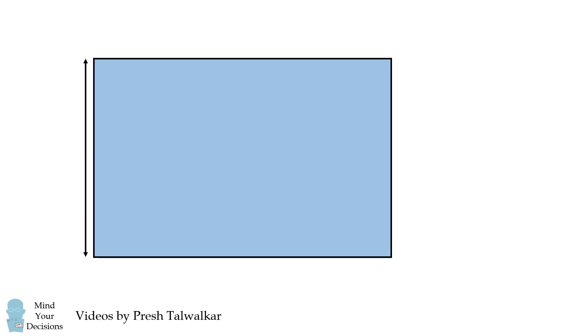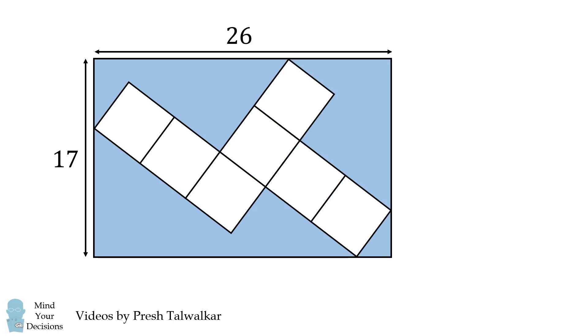A rectangle measures 17 units by 26 units. Seven squares are placed inside the rectangle as shown. The question is what is the area of a single square?